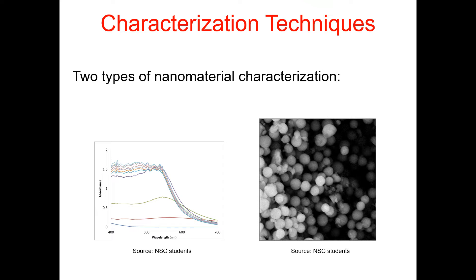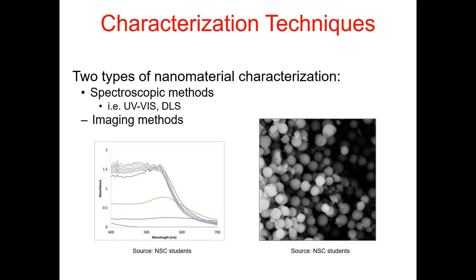We have two types of nanomaterial characterization techniques. The first is called spectroscopic methods, which are the most popular — we have UV-Vis and DLS. The second type of technique is called imaging methods, the most popular of which are TEM, SEM, and AFM.